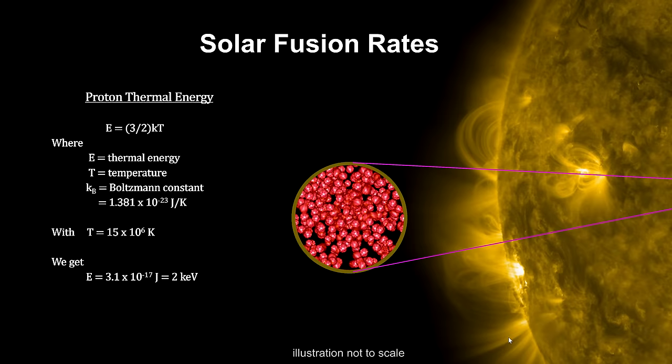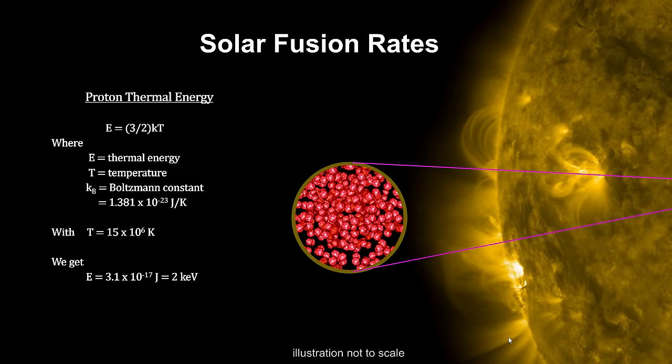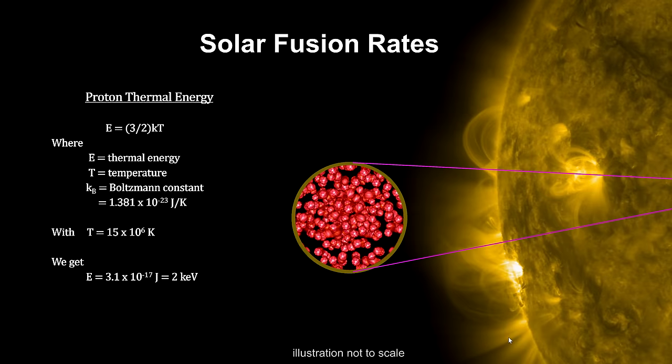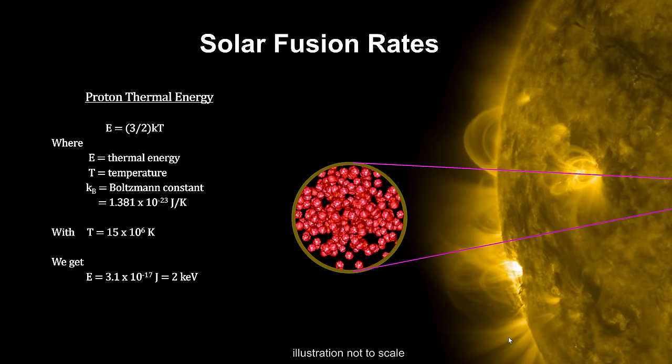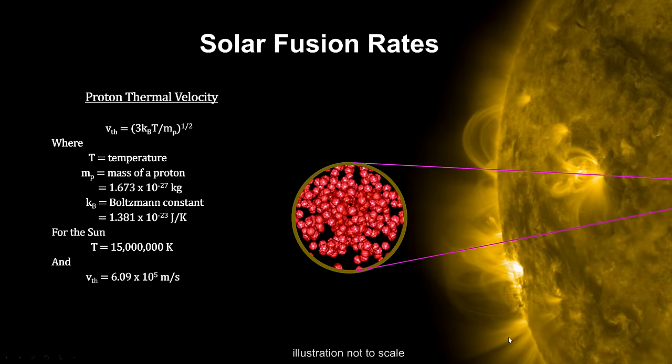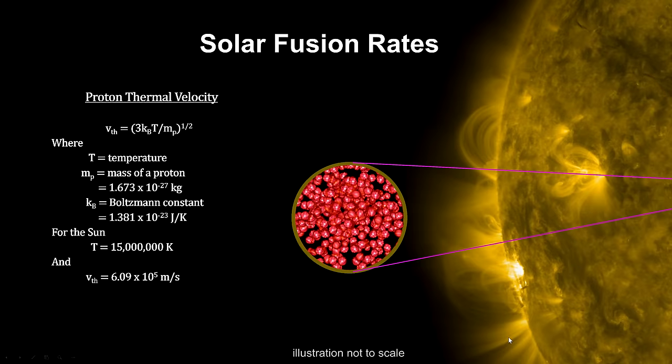Using the known relationship between temperature and kinetic energy, we can calculate the average thermal energy and velocity of the protons in the sun's core. It depends entirely on the temperature, 15 million degrees Kelvin. We find that each proton has, on average, 2 kilo electron volts of kinetic energy and travel at just over 600,000 meters per second. That's well over a million miles per hour.